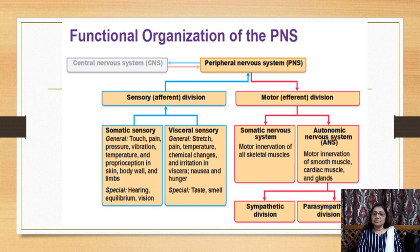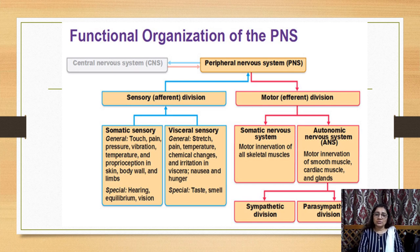The peripheral nervous system is the part connected to the spinal cord and is divided into sensory and motor divisions. The sensory division is the afferent division, which carries sensations from the peripheral organs to the brain. The motor division carries signals from the brain to peripheral organs. The sensory part is also divided into two divisions: somatic sensory and visceral sensory.